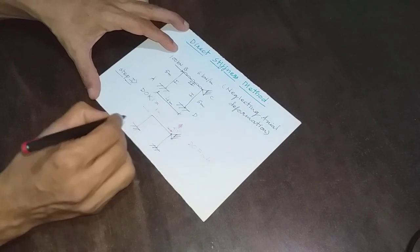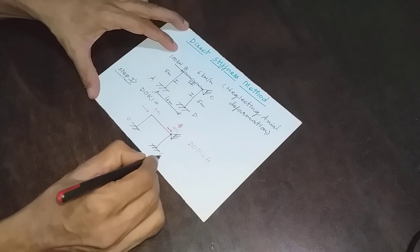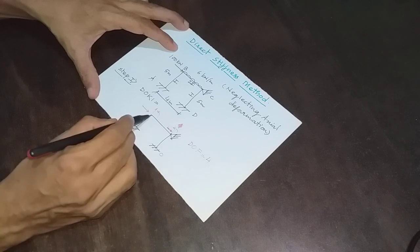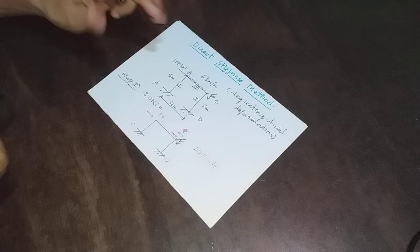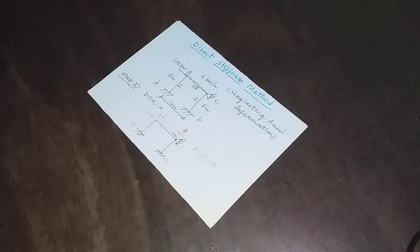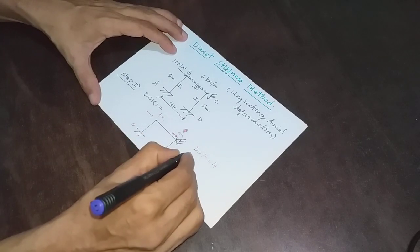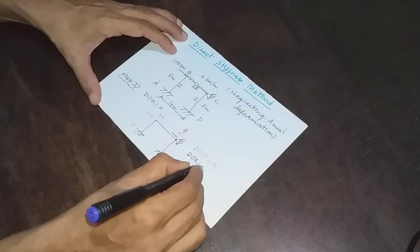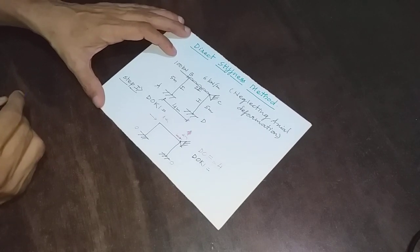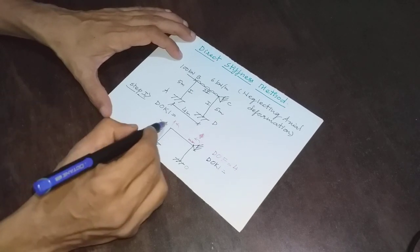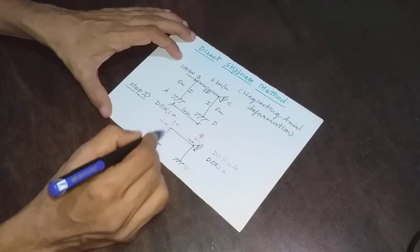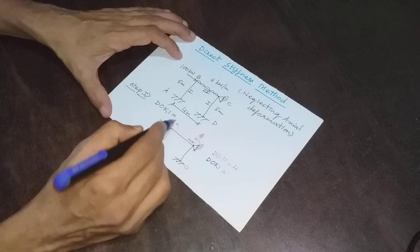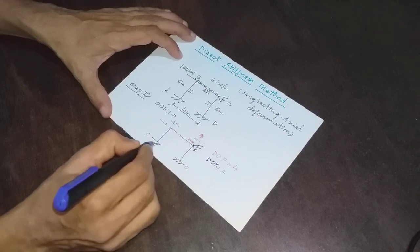Joint A is fixed — degree of freedom 0. Joint D is fixed — degree of freedom 0. Joint B is free — degree of freedom 3. Joint C is hinged — degree of freedom 1. So total degree of freedom is 4. Now, for degree of kinematic indeterminacy, we ask: what are the possible independent degrees of freedom? Is it possible for this column to move in the y-direction? No, because it is fixed.